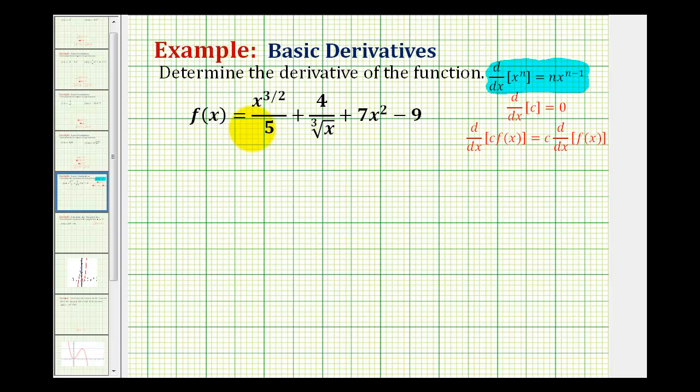We'll first rewrite this function so that we can apply the power rule to each term. So we have f of x is equal to, we might want to rewrite this first term as one-fifth x to the three-halves.